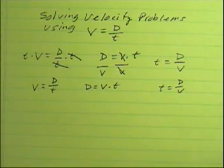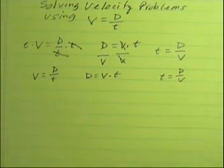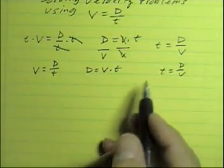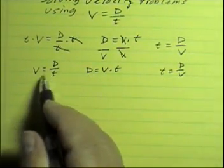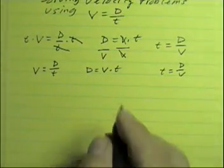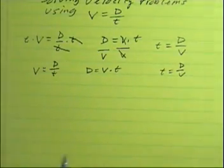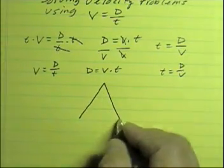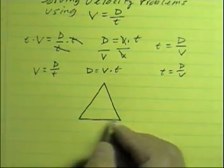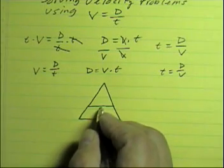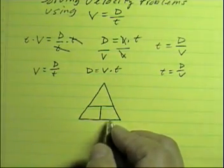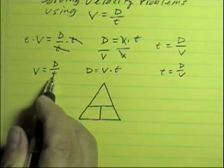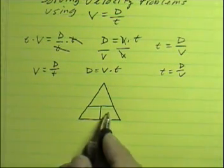Let's say you've never had any algebra before and you want to solve for displacement or time using this velocity equation. Here's a way you can do that — we'll call it the magic triangle. We'll draw a triangle on the paper and divide that triangle into three parts. We're going to take our basic equation, velocity equals displacement divided by time, and put it in this triangle.